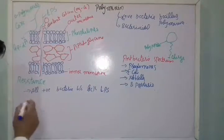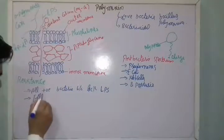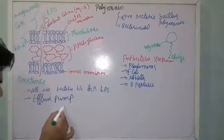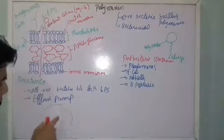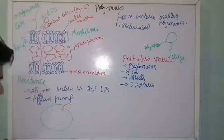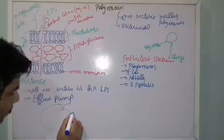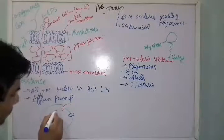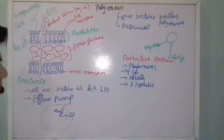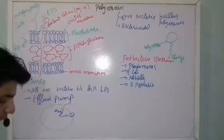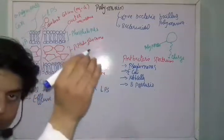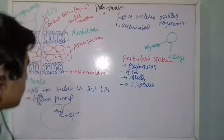The second resistance mechanism involves the efflux pump. Let's say this is a bacterial cell with a porin channel through which drugs are internalized. There are also other channels called efflux pumps. Once the drugs are internalized, they are attracted to these efflux pumps, which then expel the drugs back out of the cell. This is another resistance mechanism against these drugs.